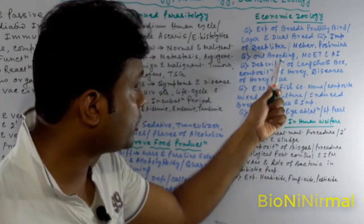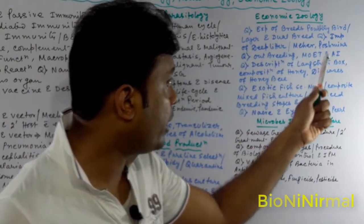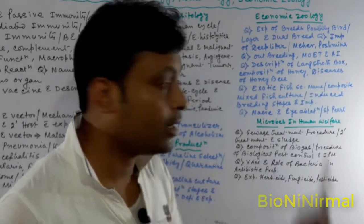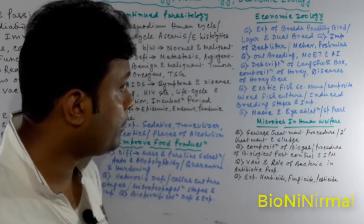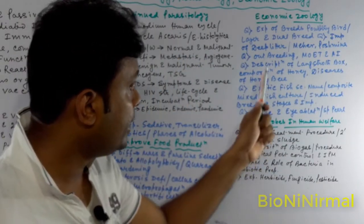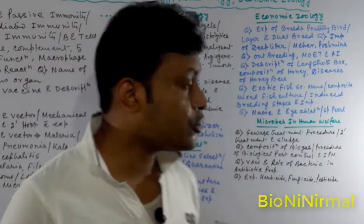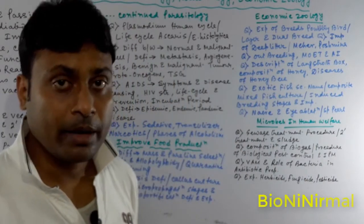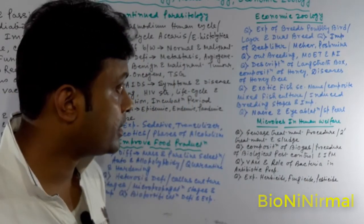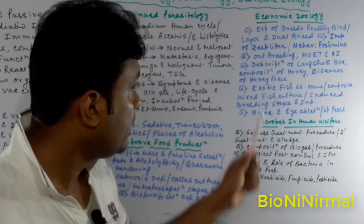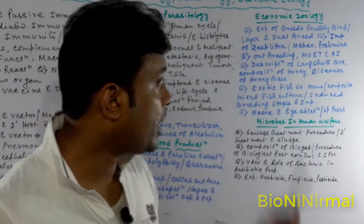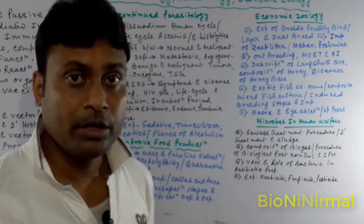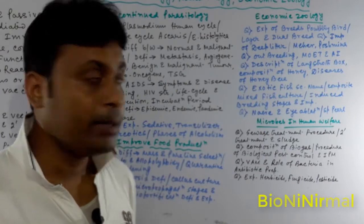Next: out-breeding and artificial insemination. Description of the Langstroth box and apiculture — the Langstroth box description, composition of honey, and diseases of the honeybee.